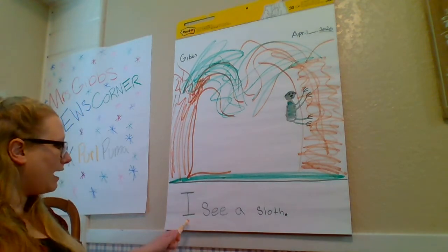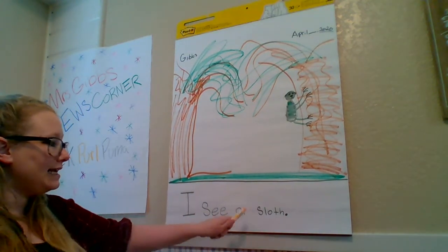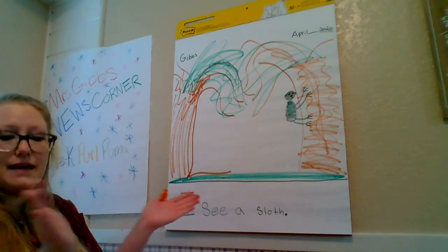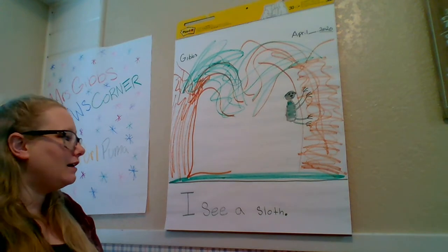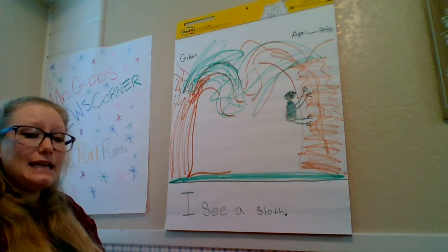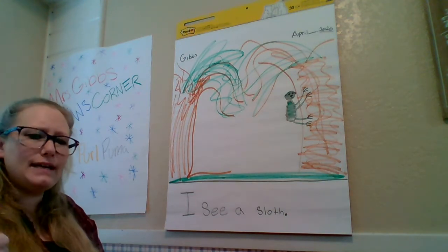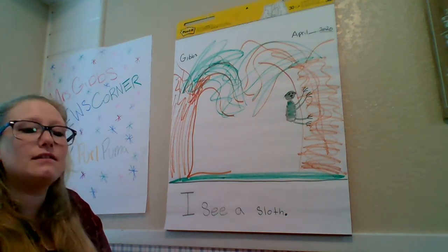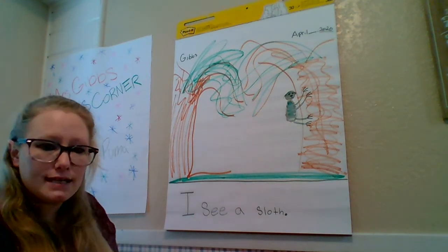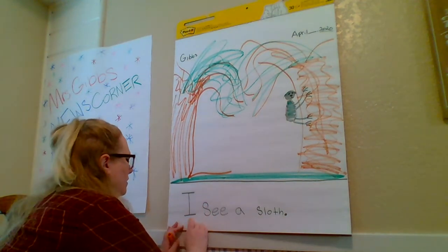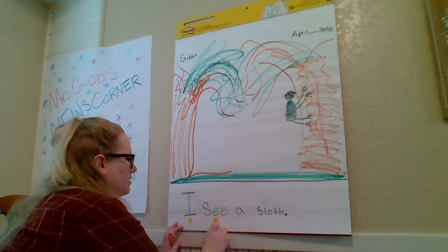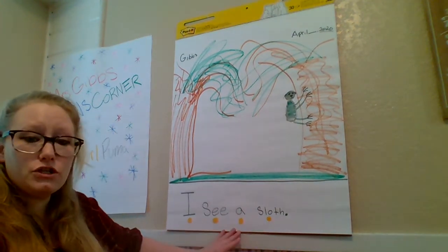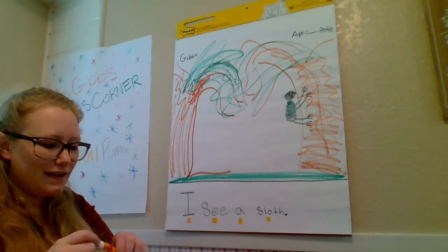Let us read our sentence: 'I see a sloth.' Awesome. Now let's clap it out — 'I see a sloth.' Now I'm going to pat it on our head — 'I see a sloth.' Great job. Now let's count it on our chinny chin chins — 'I see a sloth.' How many words do we have in our sentence? Let's count them again: one, two, three, four. How many words? Four. That's right, great job guys.